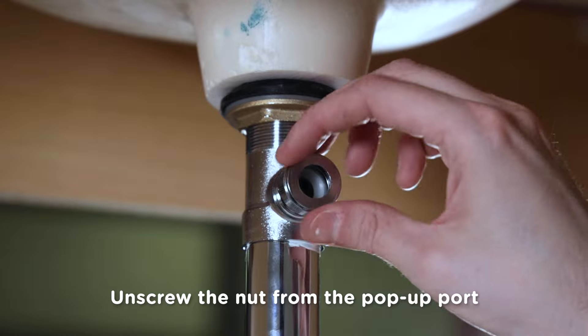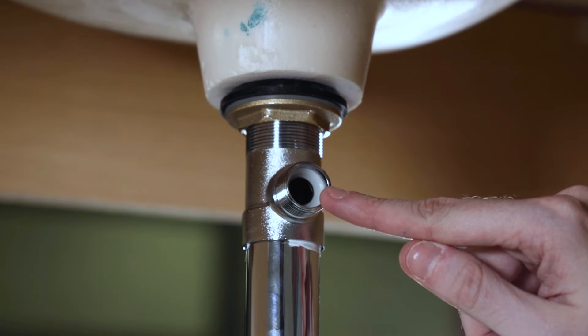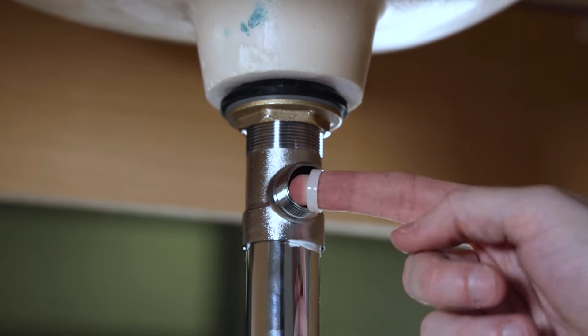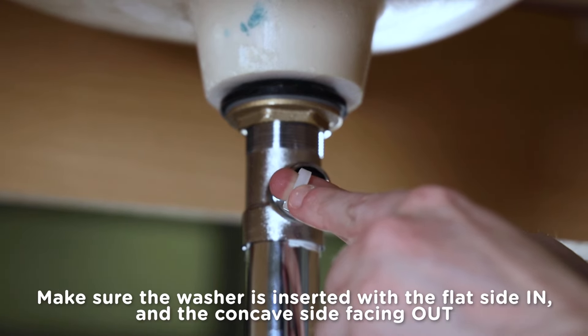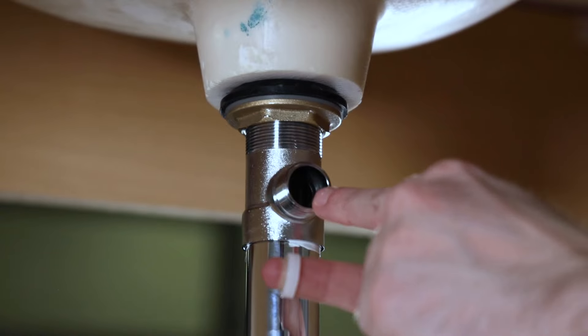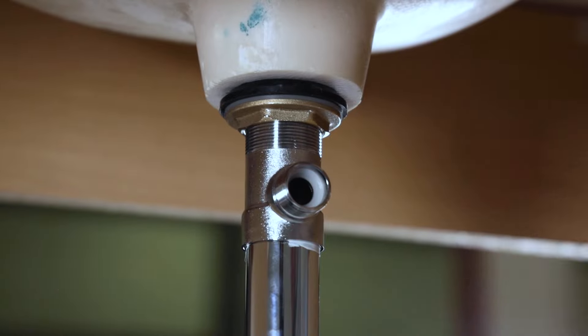First, unscrew the nut from the pop-up port, but be careful. There's a white washer inside and it may fall out when you unscrew it. Notice that the washer is flat on one side and concave on the other. Make sure that the washer is inserted with the flat side in and the concave side facing out. That concave surface will accept the ball on the pop-up rod.